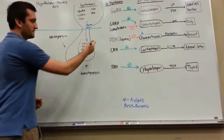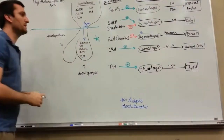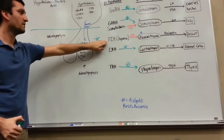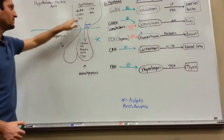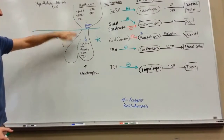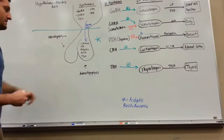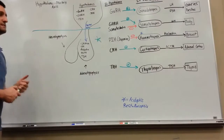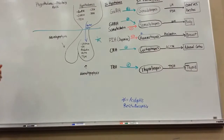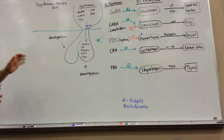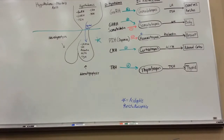The only exception is going to be PIH — the prolactin-inhibiting hormone. Since this is inhibitory, when you inhibit your inhibition — it's like a double negative — your prolactin is actually going to increase. So if you shear the infundibulum, you're going to have an excess prolactin release, with all your other four hormones being inhibited.